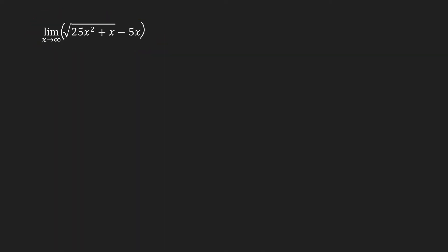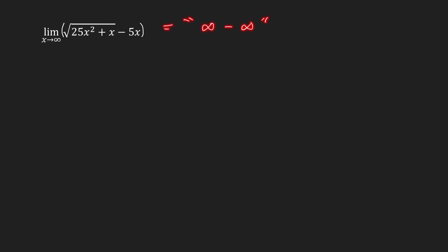Let us now find this limit as x approaches infinity. As x goes to infinity, this radicand goes to infinity, and this 5x here also goes to infinity. So the limit has the form infinity minus infinity, and we know that this is an indeterminate form. Again, we need to do extra effort in order to evaluate this limit. The trick in evaluating this limit is using rationalization.